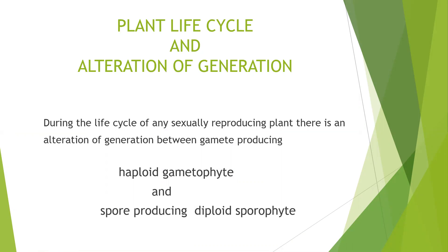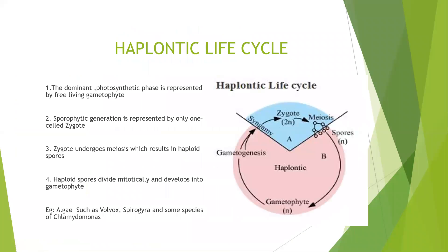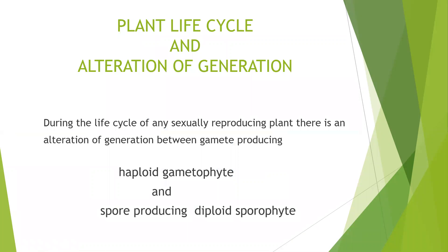Whenever plants are sexually reproducing, you always see that the haploid gametophyte and the spore-producing diploid sporophyte stages are alternating with each other. This is known as alternation of generation.